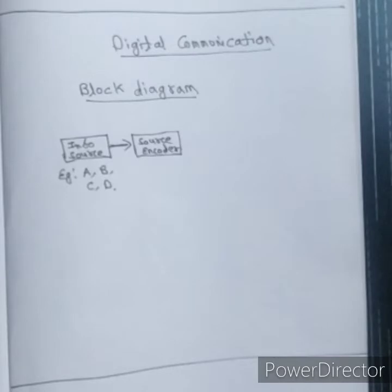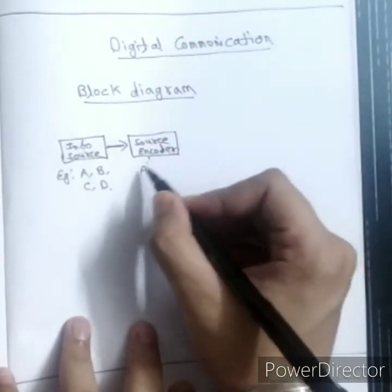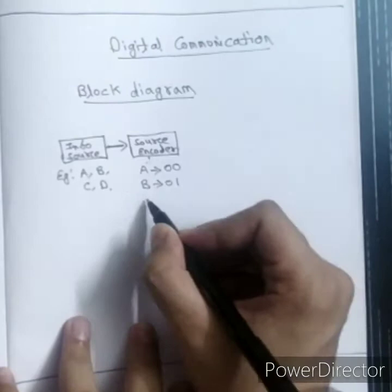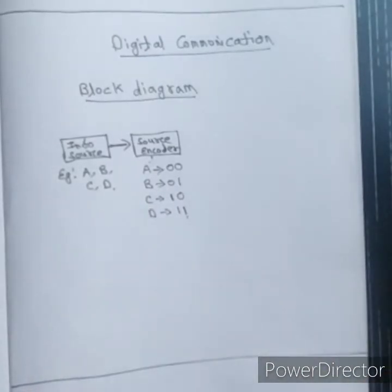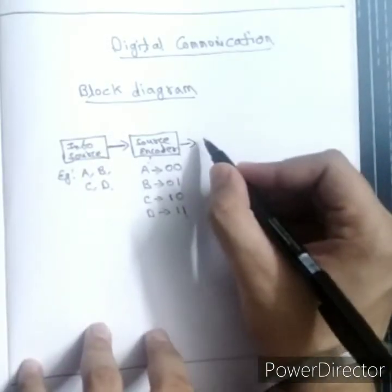The source encoder will convert the messages generated by the information source into bits. For example, with four symbols, the source encoder can convert: A to 00, B to 01, C to 10, and D to 11. This is the work of the source encoder — it converts messages from the information source into a stream of bits.